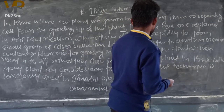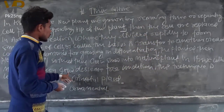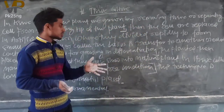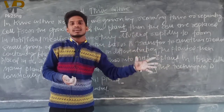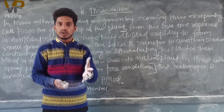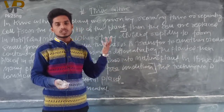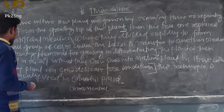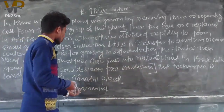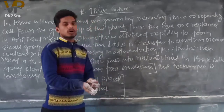In tissue culture, many plants can grow under disease-free conditions. Tissue culture is most commonly used to generate new individual plants that are disease-free. This technique is commonly used in ornamental plants, where tissue culture is widely applied as a method of plant production.